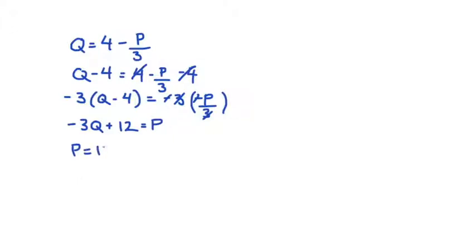I'm going to put P on the left hand side and the positive first, so we're going to get P is equal to 12 minus 3Q. Okay, really good.